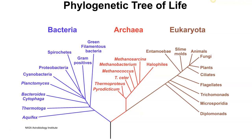We're going to look at a kingdom that has very distinctive characteristics. Everything is heterotrophic. Everything has a cell wall. They are eukaryotic, therefore cells have membrane-bound organelles. For the most part, they lack motility in the feeding stage.